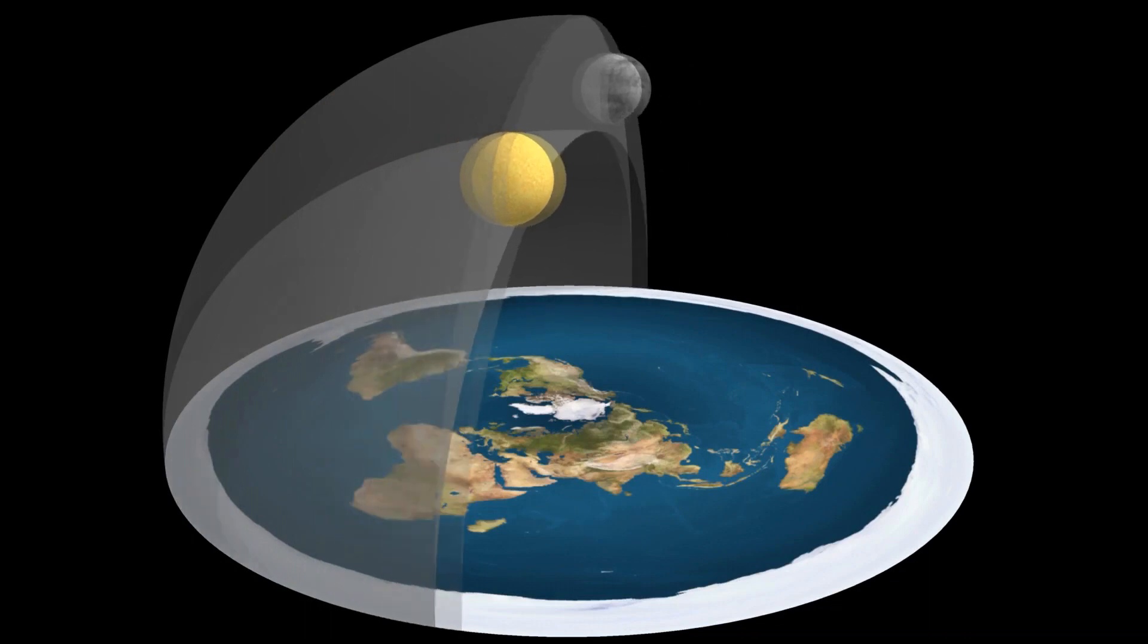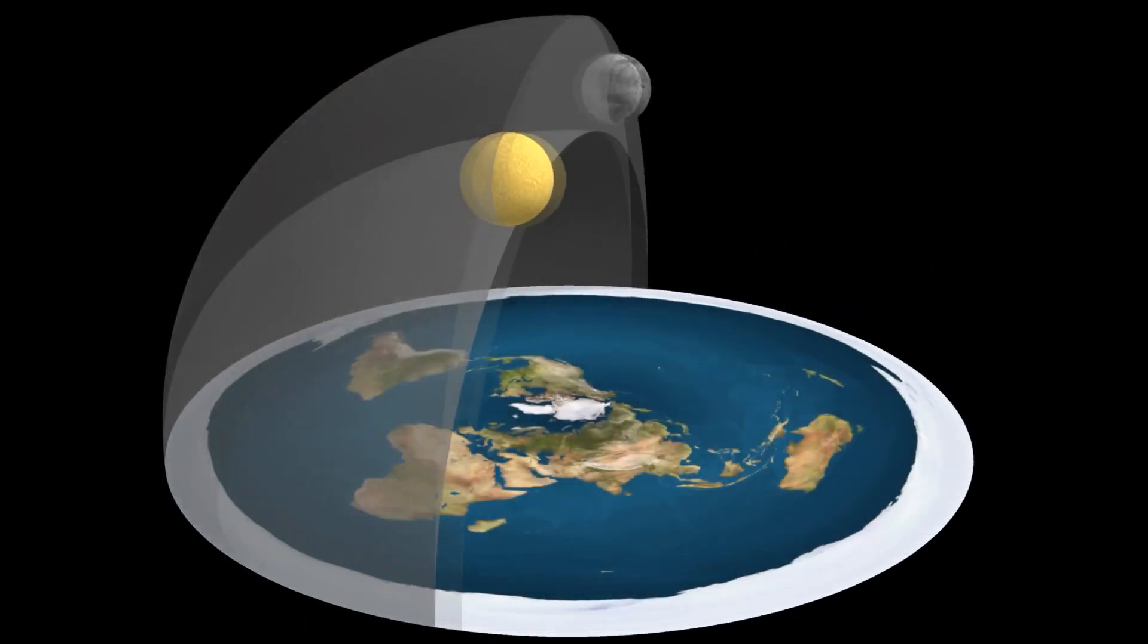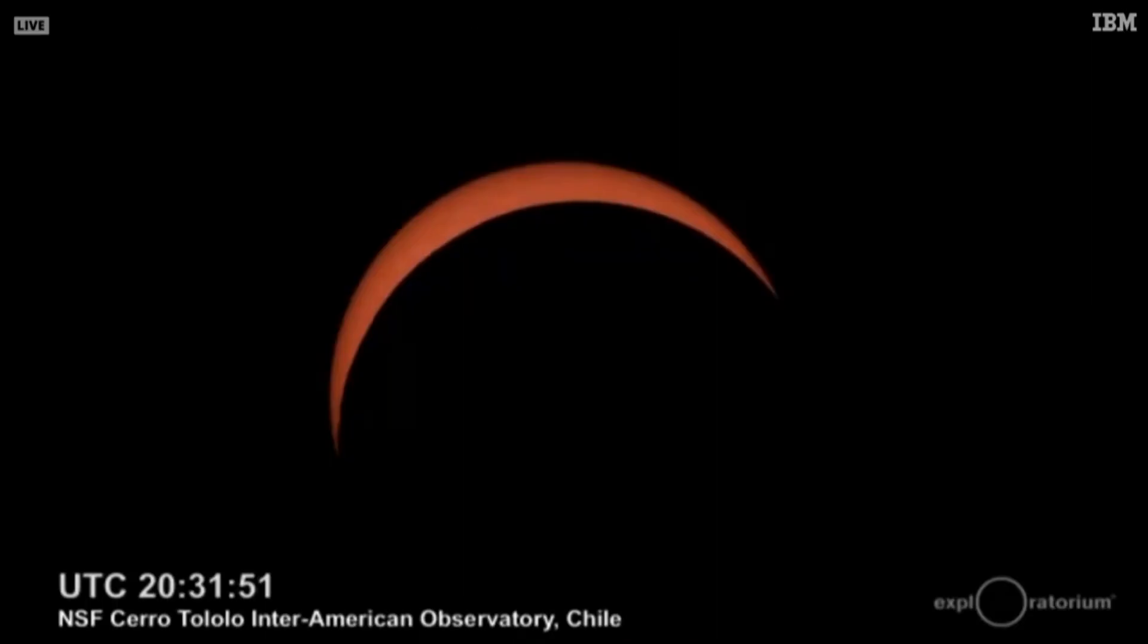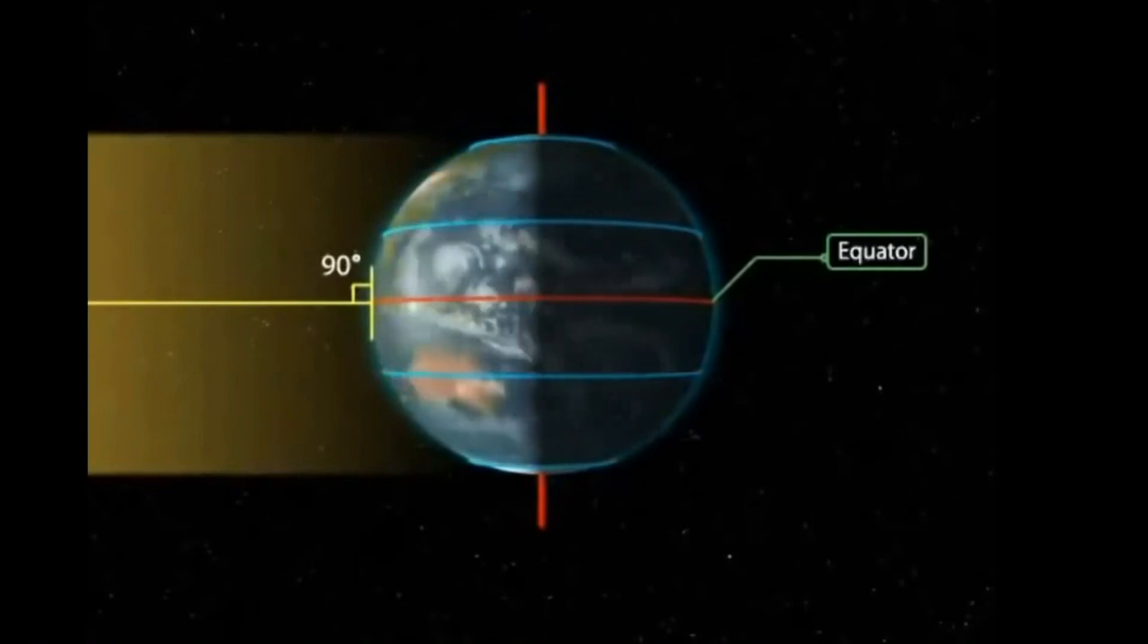Now, true, flat earthers may argue that it's the dome rotating the sun and the moon, but if they are embedded in the firmament, how could the sun get behind the moon during eclipses? Or consider equinoxes and solstices.